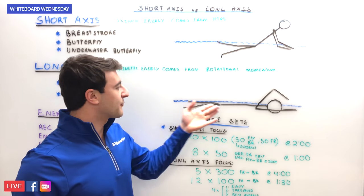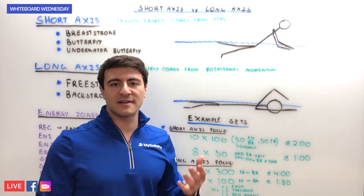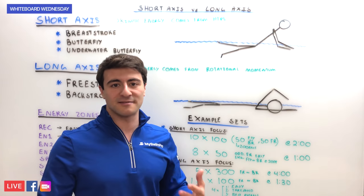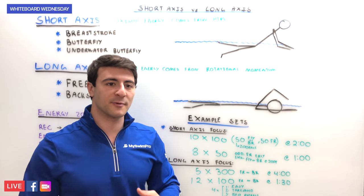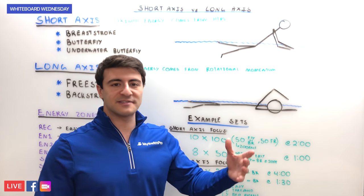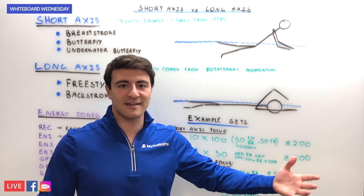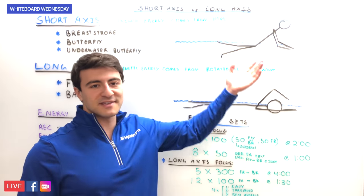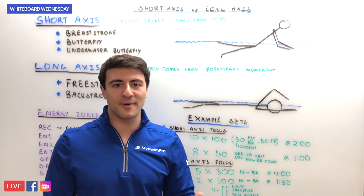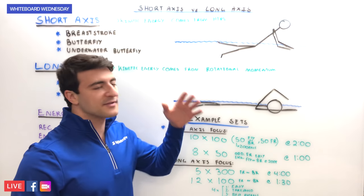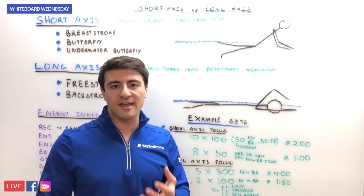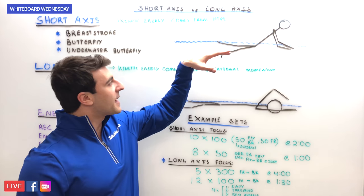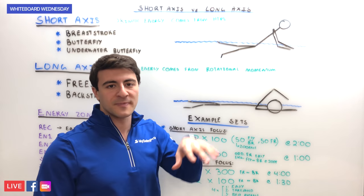Compare that with freestyle and backstroke: in races, people are often able to negative split or even split — going just as fast on the second half as on the first half. You would never see this in breaststroke or butterfly, simply because of the inefficient nature of the stroke and the fact that your body position sits a little bit lower in the water.